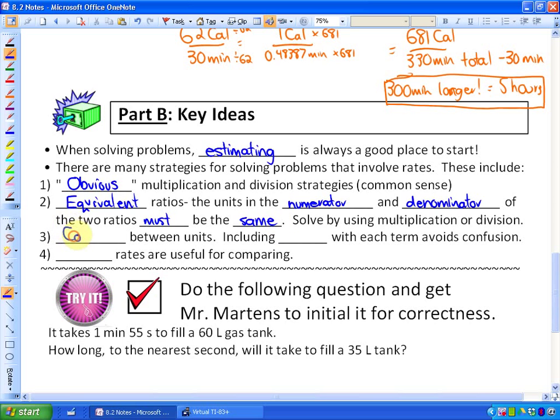A third method is converting between units. So we saw in a previous lesson how we converted between American and Canadian dollars and gallons and liters. And including units with each term avoids confusion. And finally, very helpful is that unit rates are useful for comparing.